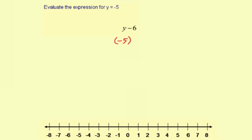See, it's y equals negative 5, so I put parentheses around the negative 5 to show it's all together, and then minus 6. So now I can see it's negative 5 minus 6.